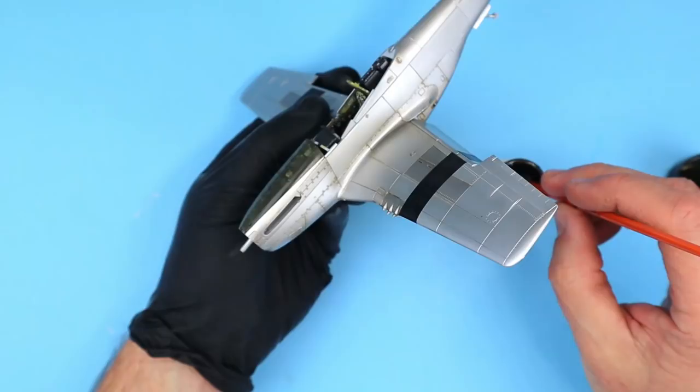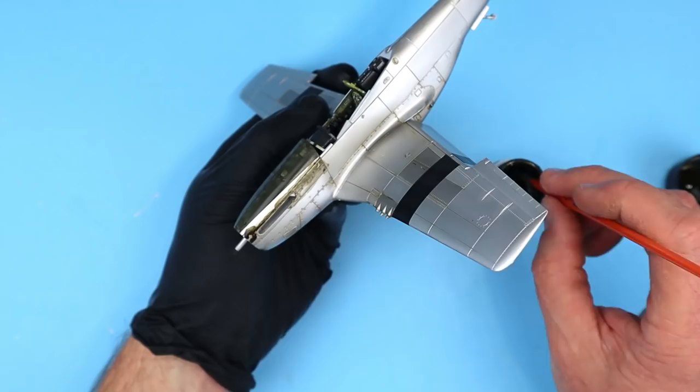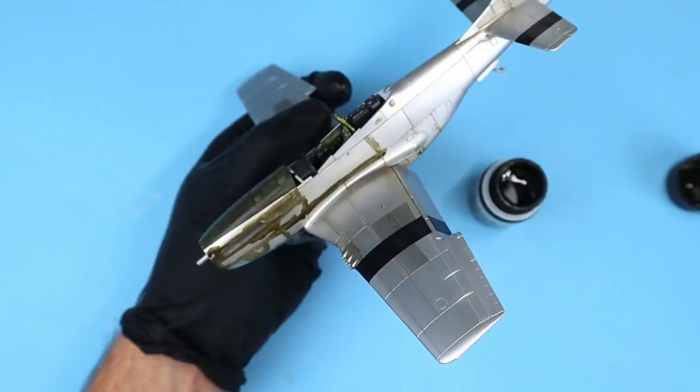I like to use AK's panel liner for winter camouflage. It's dark but not pure black and has an oily green hue to it. I apply it over the panel lines and rivet details, wait for a few minutes and then wipe it off with a clean paper towel.